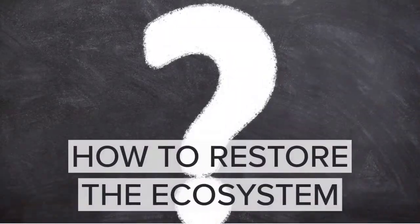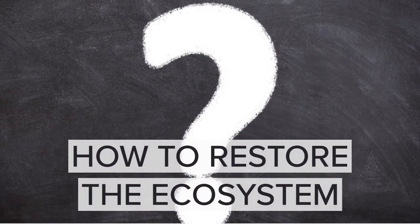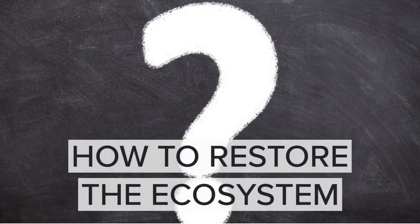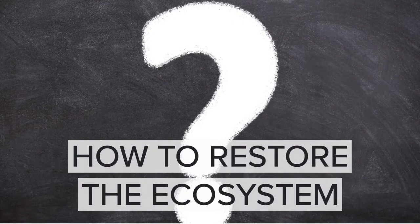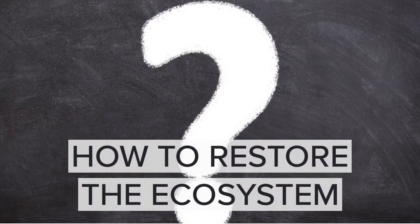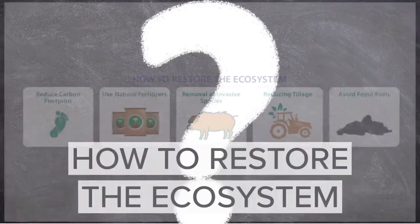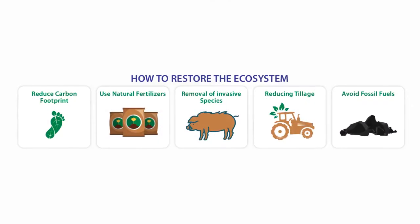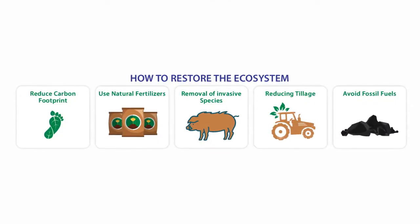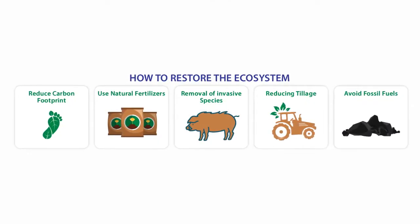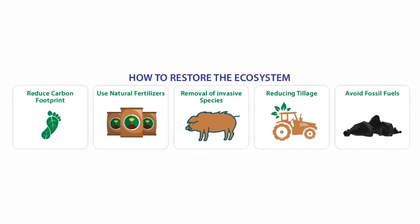How to restore the ecosystem. Ecosystems are self-healing — with the right conditions, they can repair and restore themselves. Plants and animal communities can recover from damages caused by the factors highlighted above with human intervention.